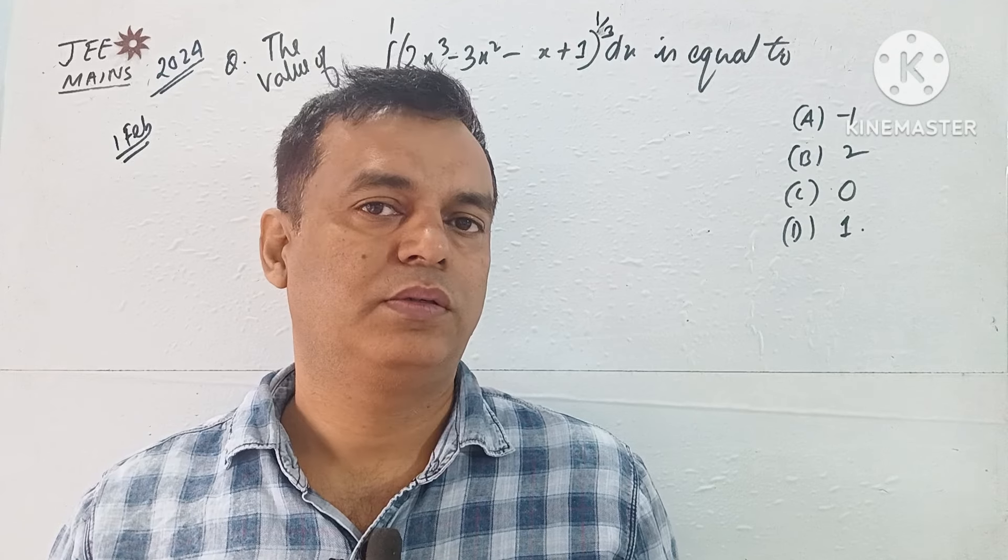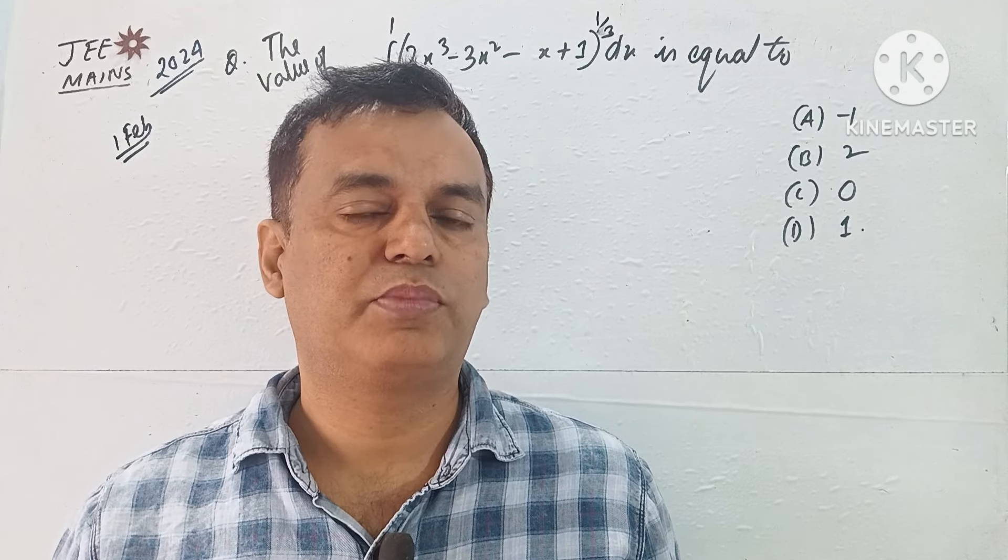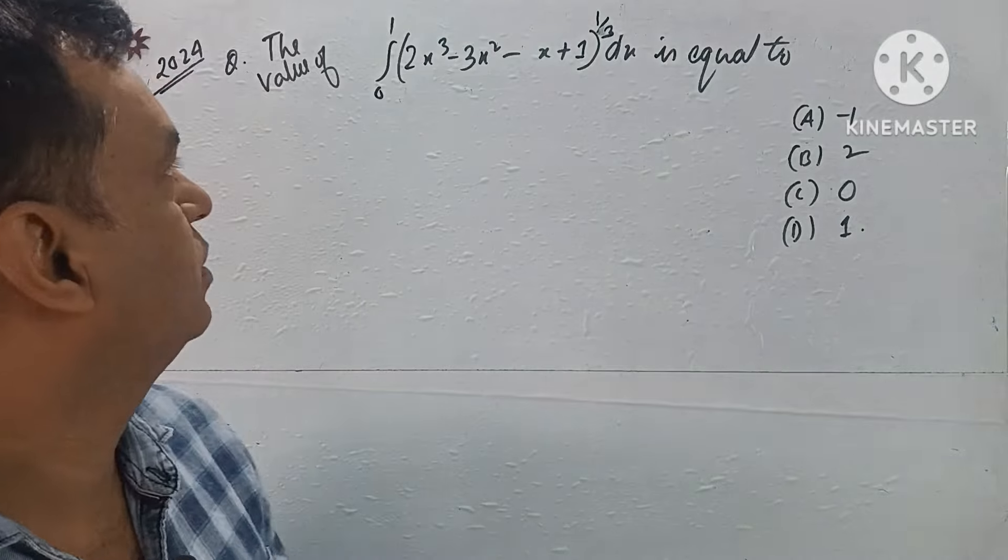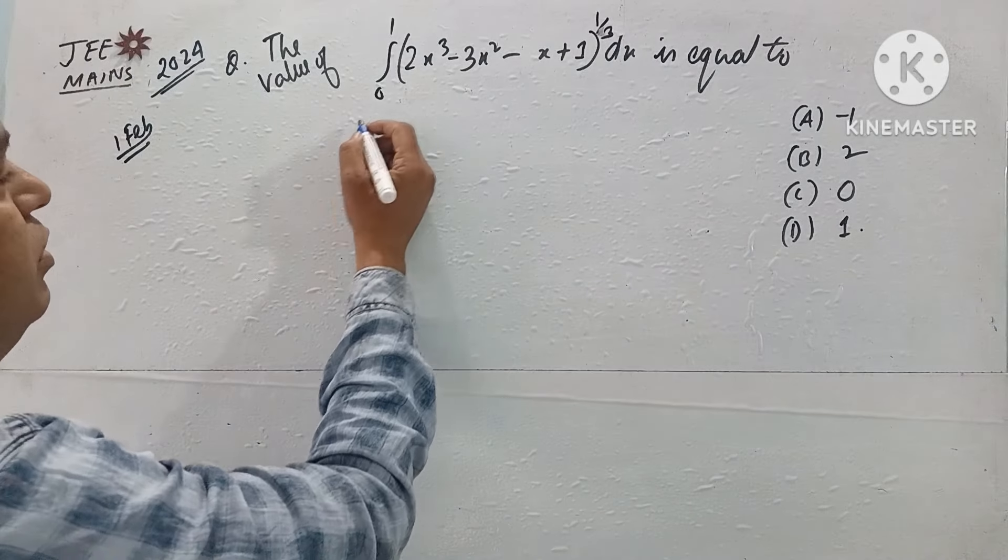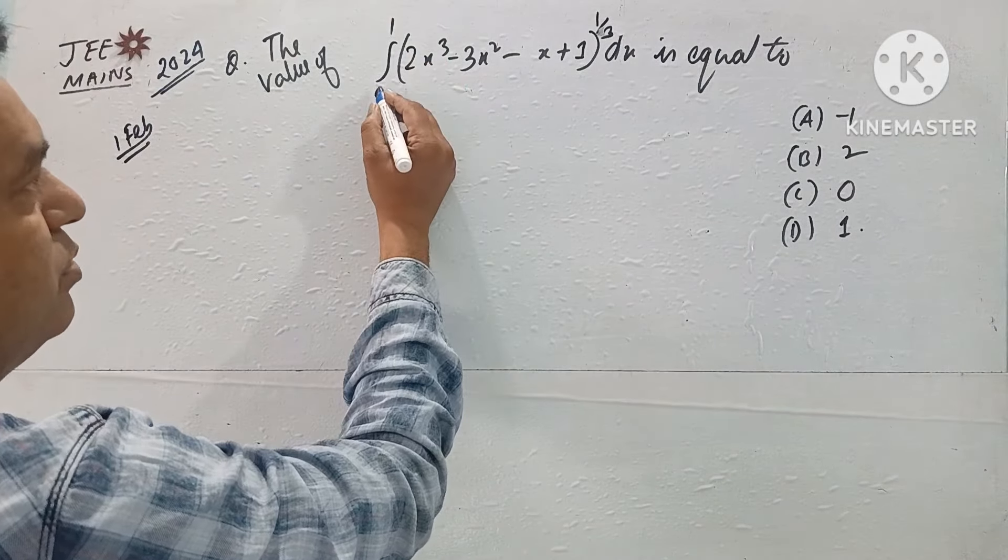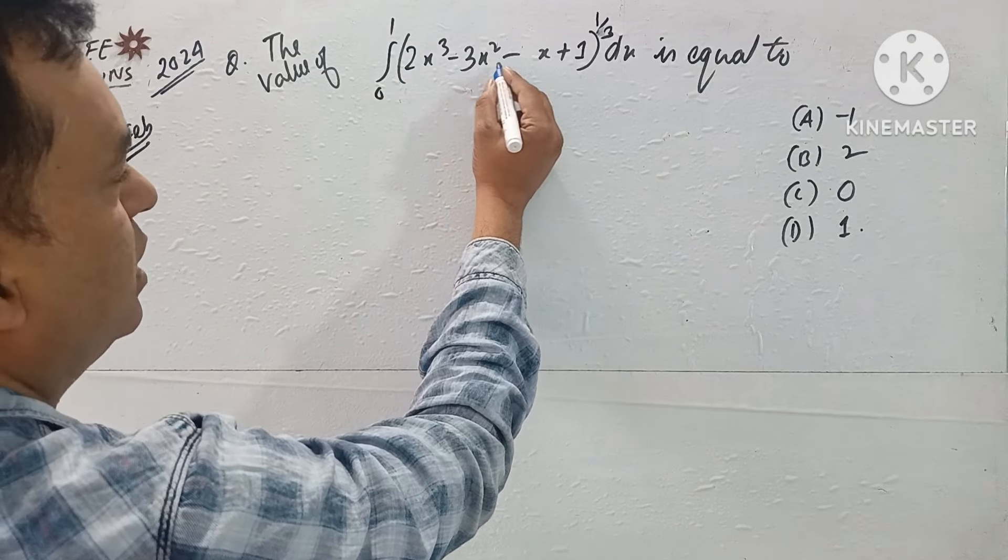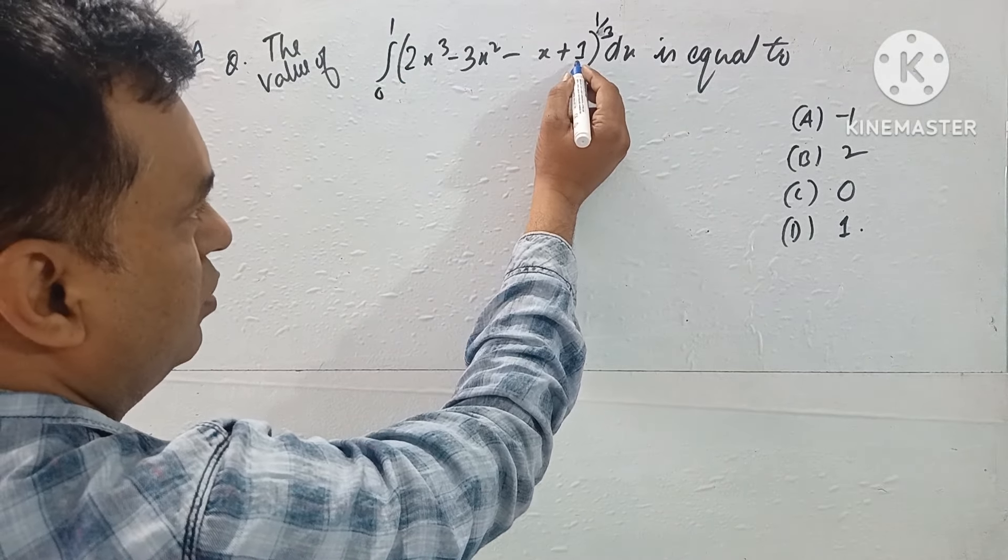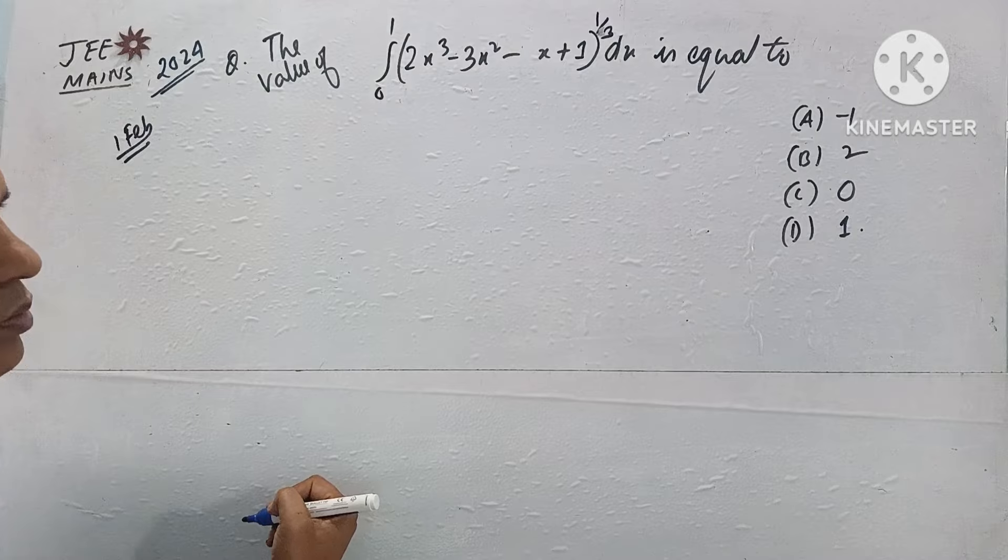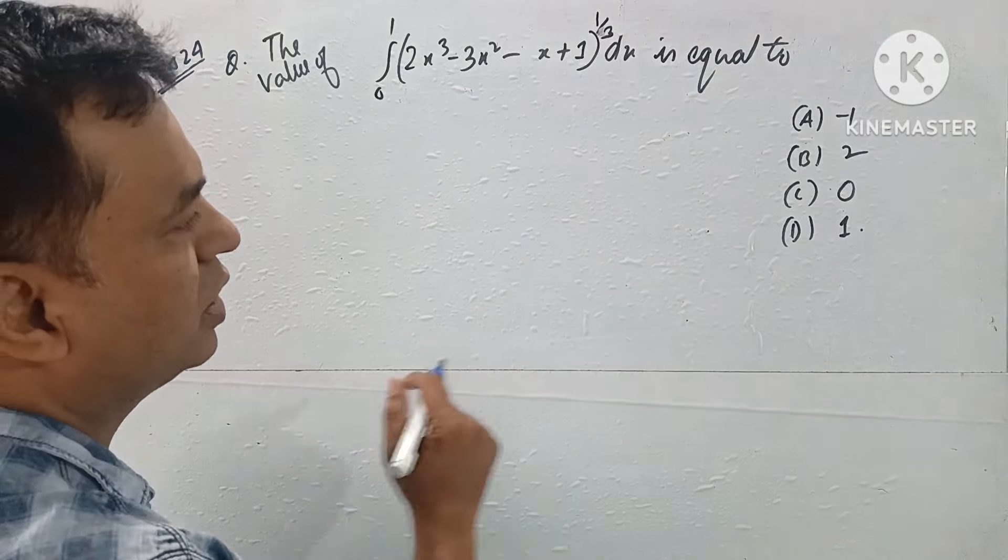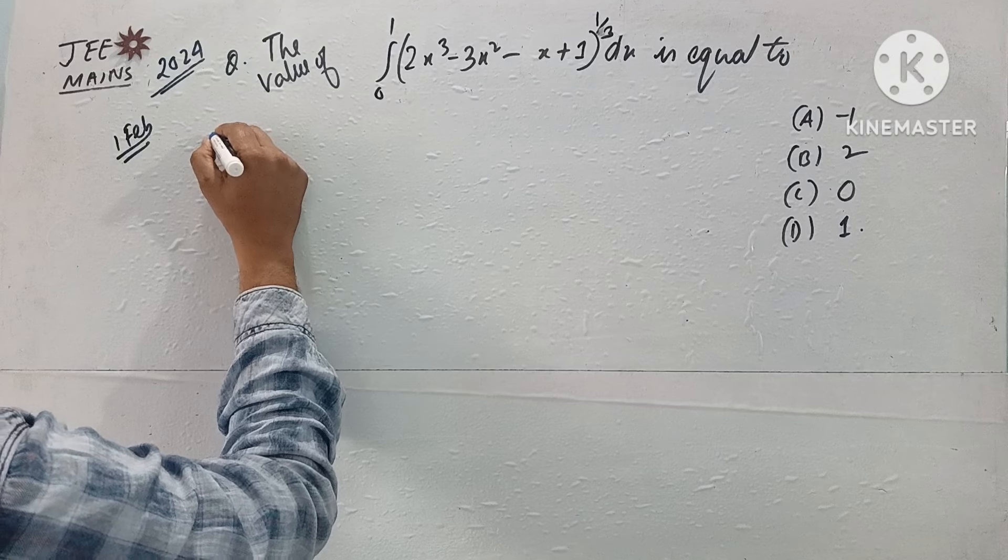Definite integral, 1st February problem solve. Find the value of the integral from 0 to 1 of (2x³ - 3x² - x + 1)^(1/3) dx equal to which option? I don't have the solution immediately.